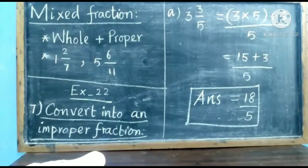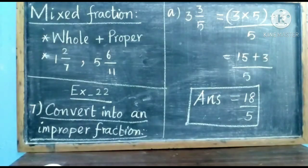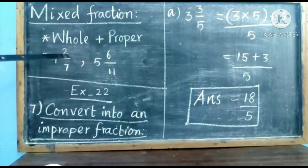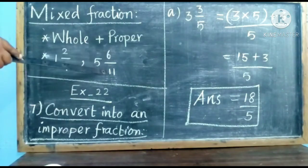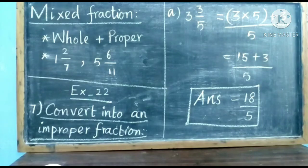The next type is mixed fraction. A mixed fraction is nothing but a whole number plus a proper fraction. For example, 1 and 2 by 7 — here 1 is the whole number and 2 by 7 is the proper fraction because the numerator is small. Similarly, 5 and 6 by 11 — here 5 is the whole number and 6 by 11 is the proper fraction. We can convert a mixed fraction into an improper fraction, and an improper fraction can also be converted into a mixed fraction.